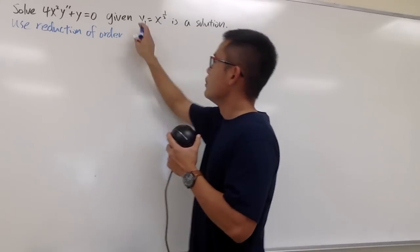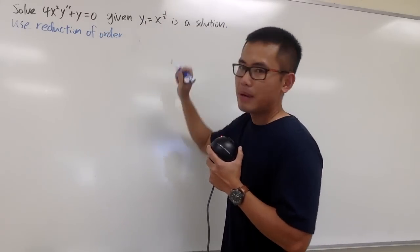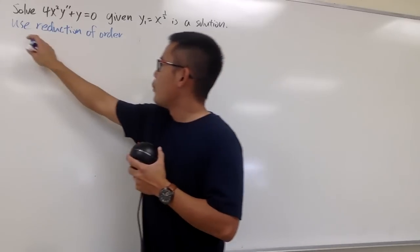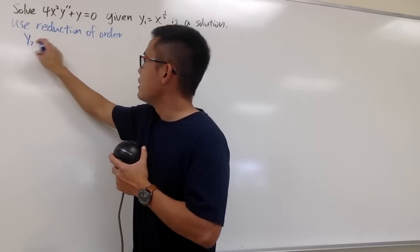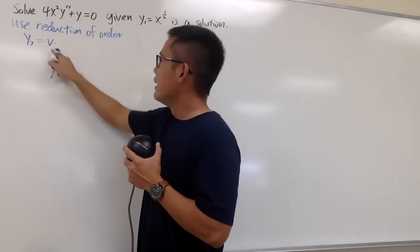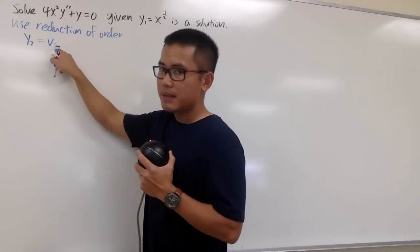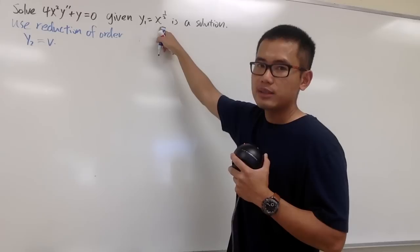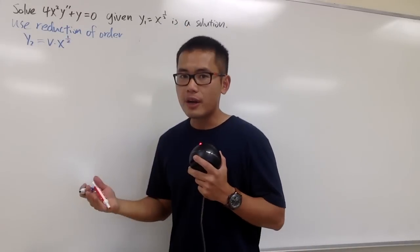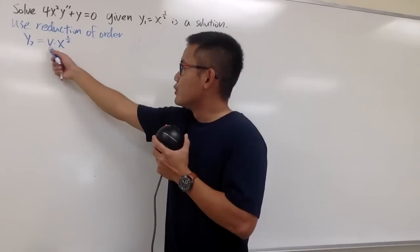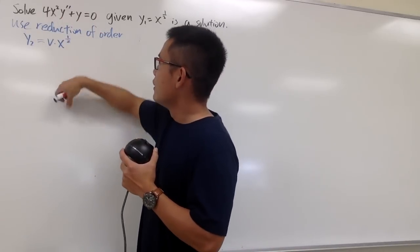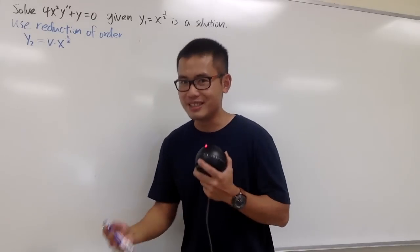We're given y₁, which is x to the 1/2 power. I will label y₂ to be our second solution. y₂ is going to be a product of an unknown function — usually we denote that by φ — times the given solution, which is x to the 1/2 power. From here, we'll differentiate this twice, because we have the second derivative in the equation, then plug everything in and solve for φ.